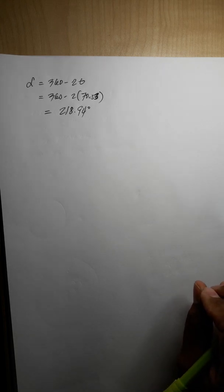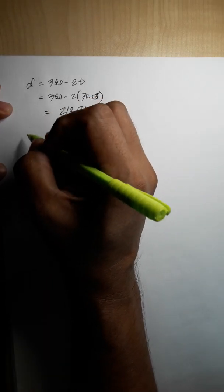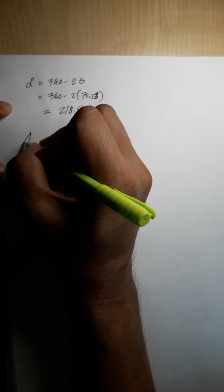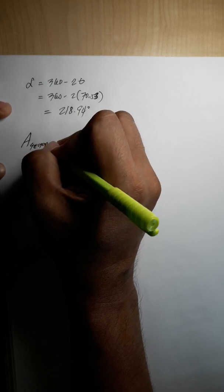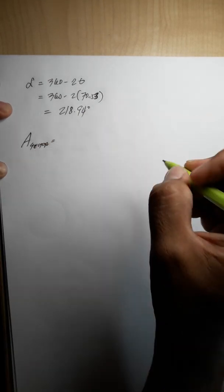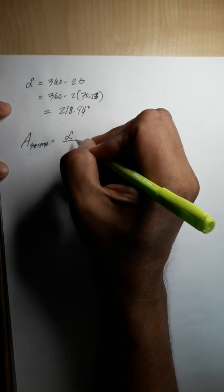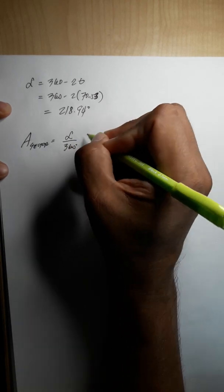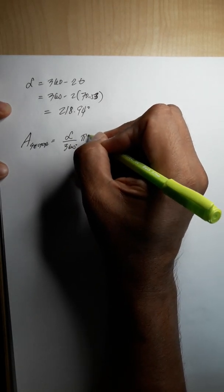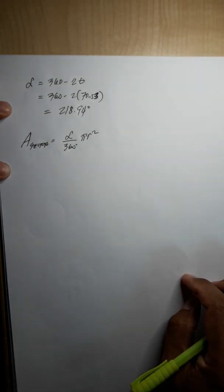Now we are ready to find the area of the sector. Area of the sector equals alpha over 360 degrees times pi r squared.